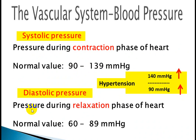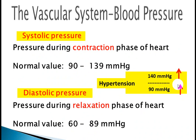Diastolic pressure is the pressure during the relaxation phase of the ventricles. It also exerts pressure on the arteries and blood vessels. The normal diastolic range is 60 to 89 mmHg. Below 60 is hypotension, and 90 and above is hypertension. A patient has hypertension if the systolic is 140 and above, or the diastolic is 90 and above, or both.